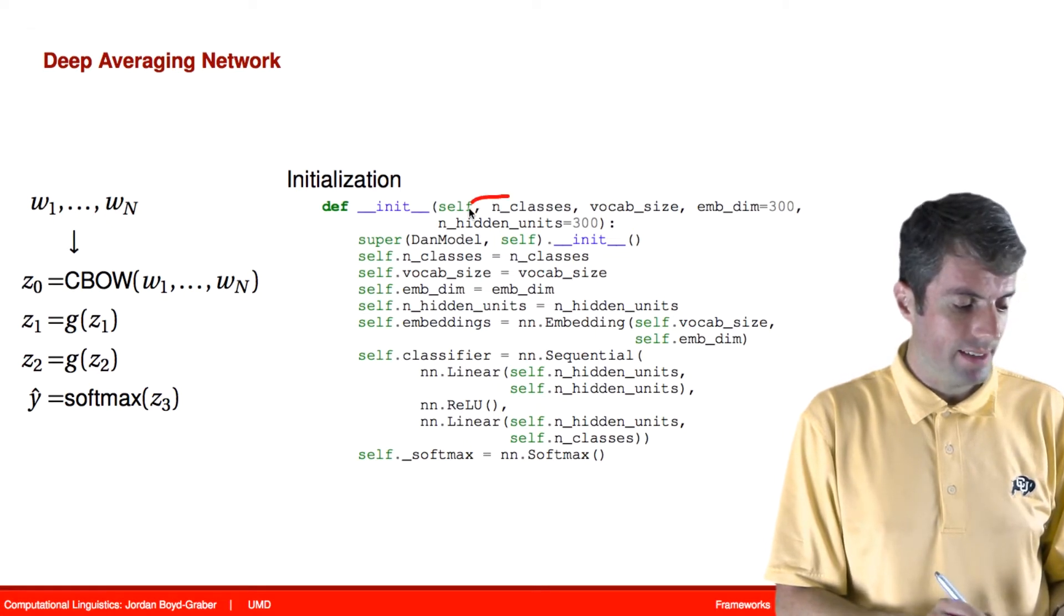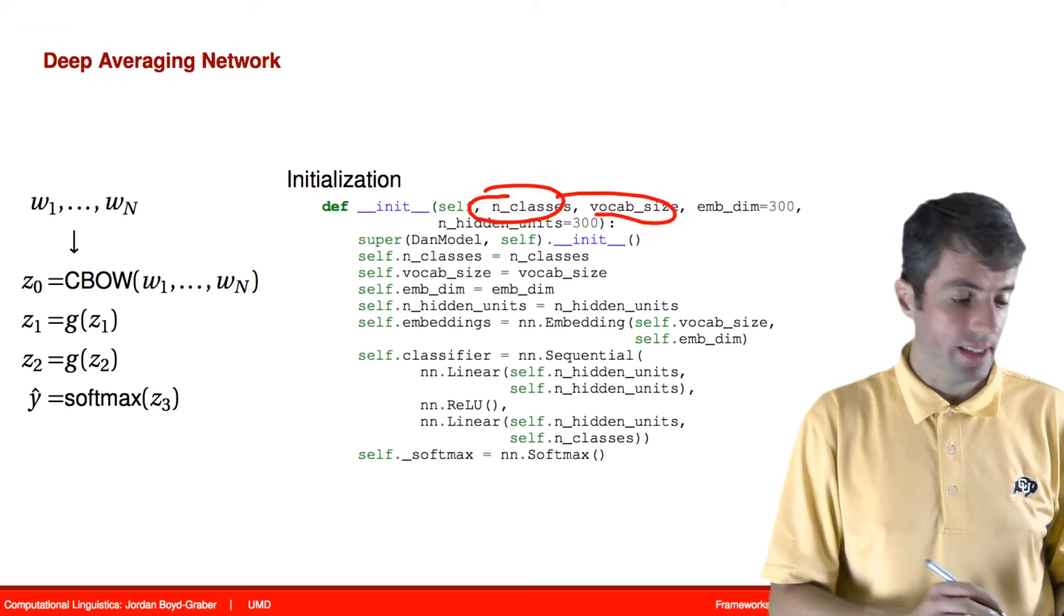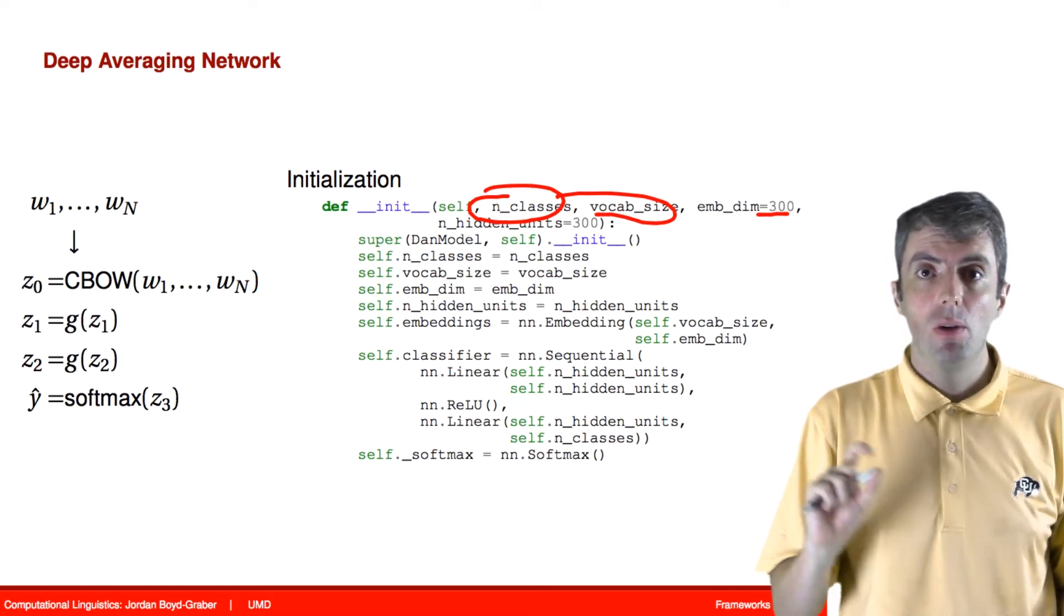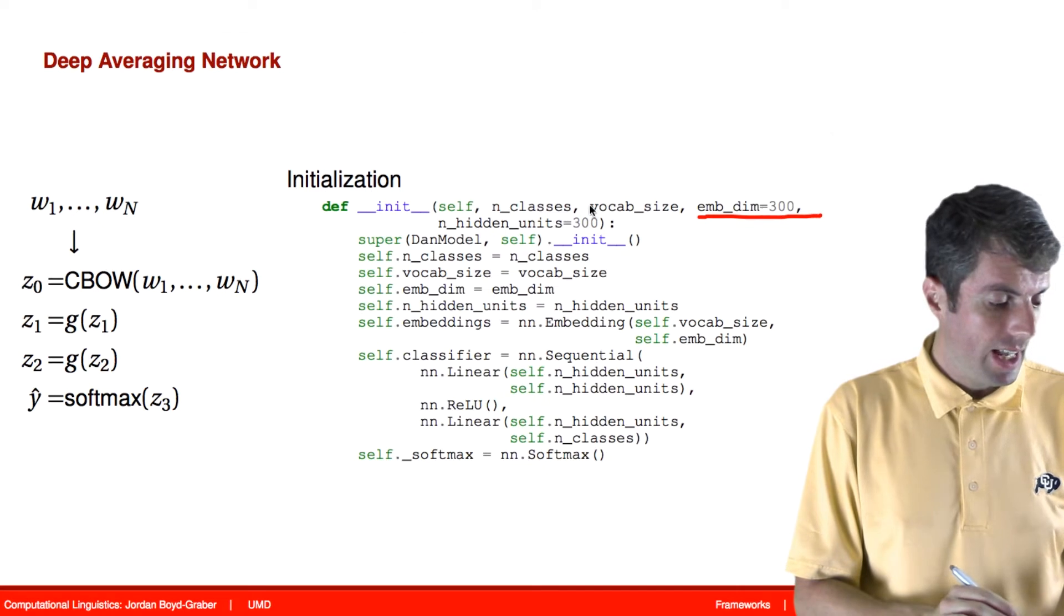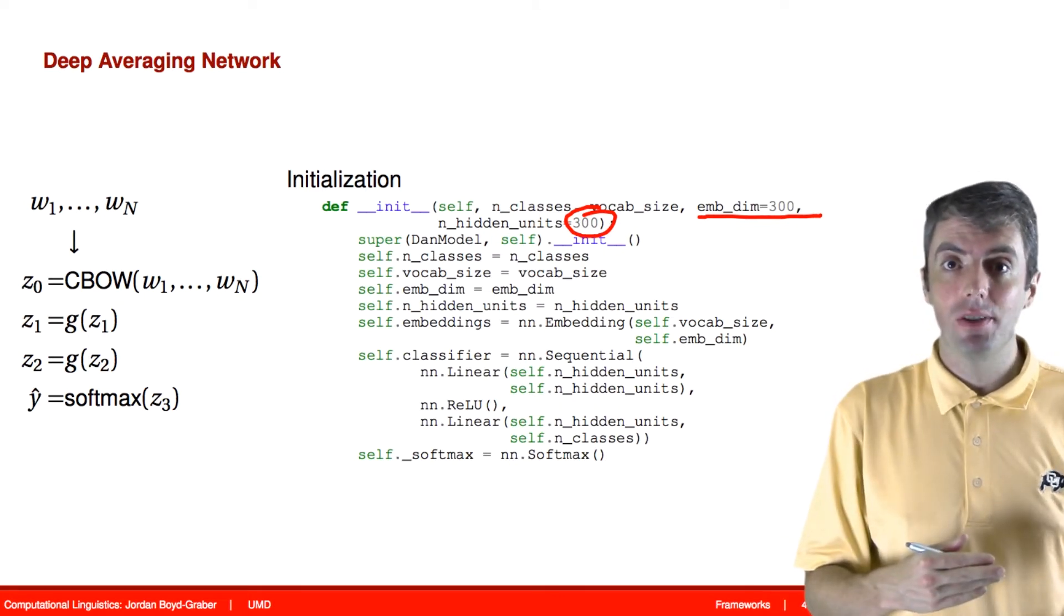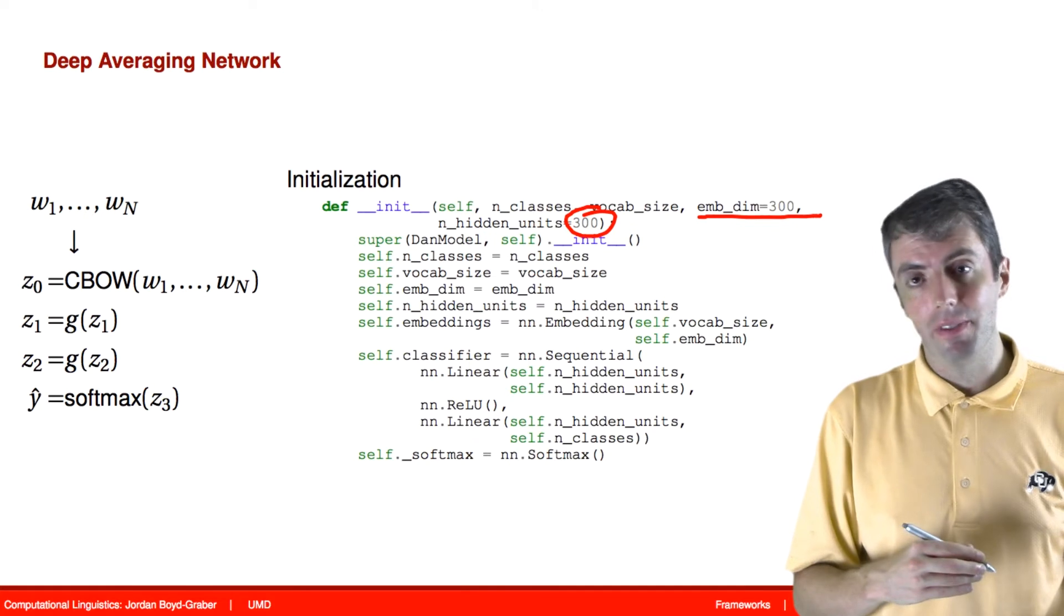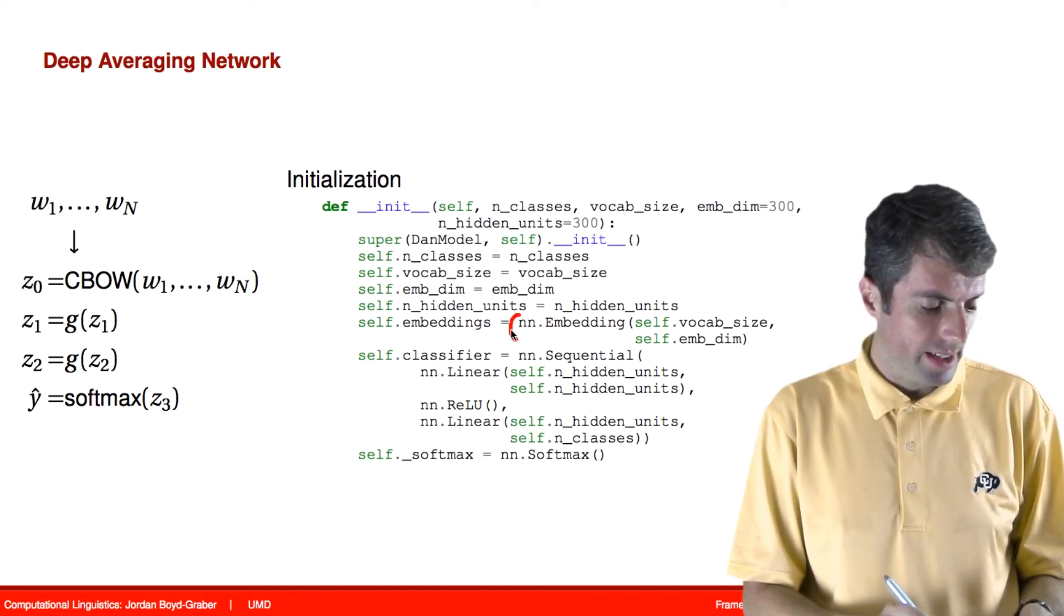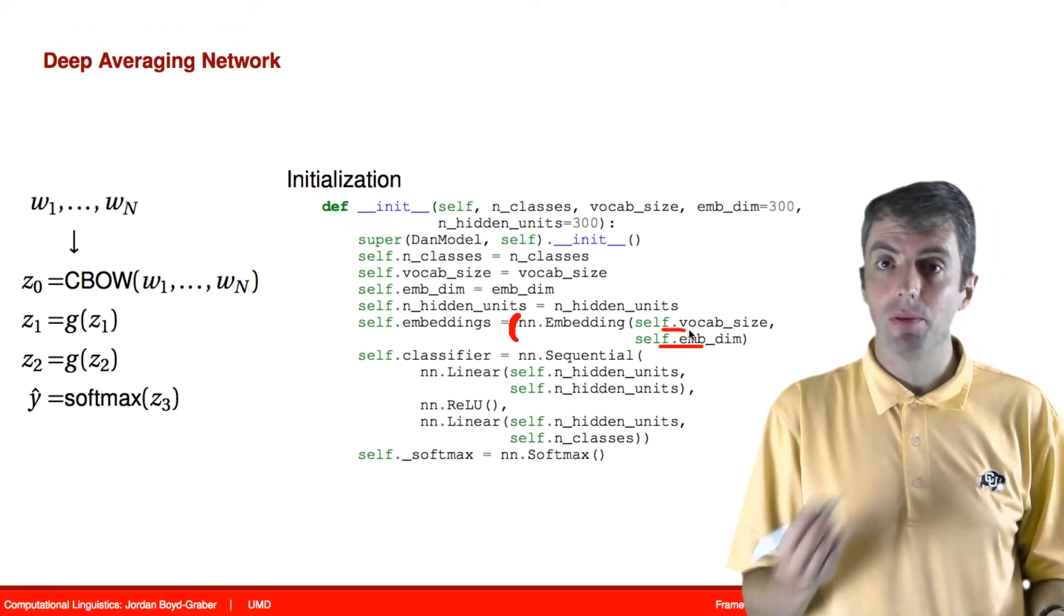We need to tell it the number of classes that the classifier can output, the vocab size—how many words it can possibly see—and the dimensionality of the embeddings, so how many dimensions the words will be represented as before we take the average. The model also needs to know how many dimensions to use in the hidden layers, and how many dimensions our representation of the document will have. In this case, we'll also use 300 for that, as well as the embedding dimension. Now we can set up our parameters. We need the embedding layer here, which will represent each of the words in our vocabulary with a 300-dimensional embedding, and these are parameters that our model will learn.